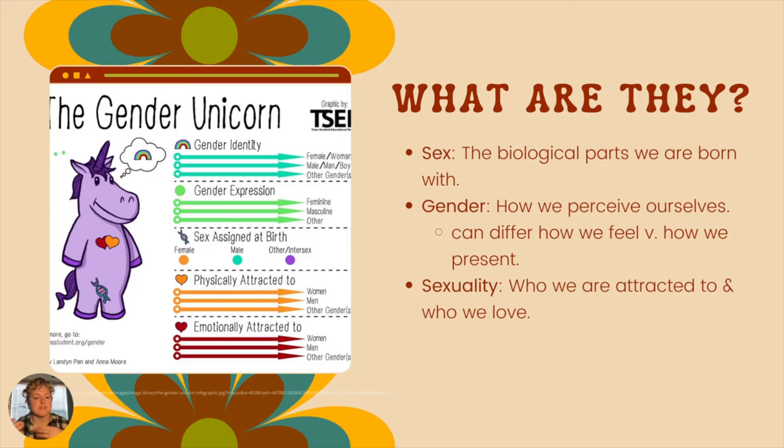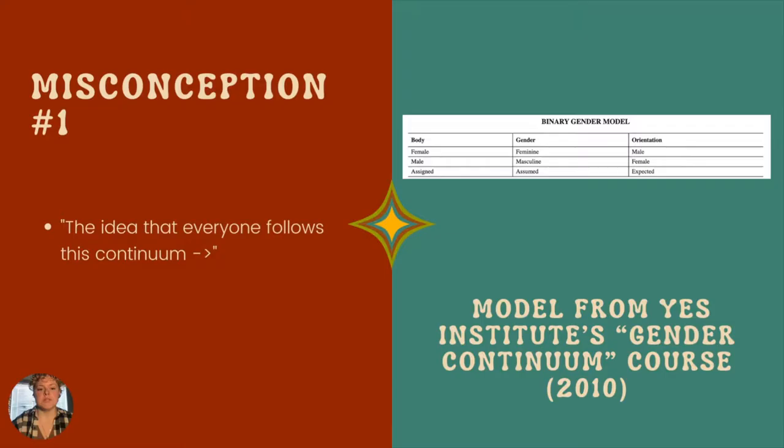Our sexuality is in our heart — it's who we're attracted to. It can be physical or emotional, or both. You could be physically attracted to men but emotionally attracted to women — there's a whole combination of ways it works.